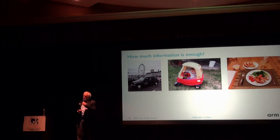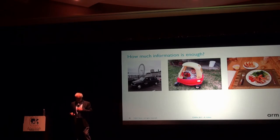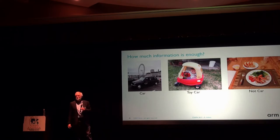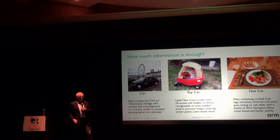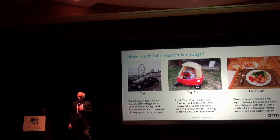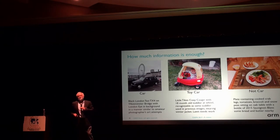We can also think about how much information is enough. Here we have some pictures and we ask what we're actually trying to do with them. We might just say: there's a car, there's a toy car, and there's a thing that isn't a car — a pretty simple characterization. But if you use an inception-style network, huge amounts of information pop out, not all of which is necessarily useful. We don't really care that it's a little tyke's cozy coupe — we just care that it's a toy car and not a real car.